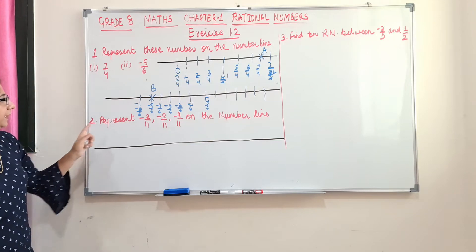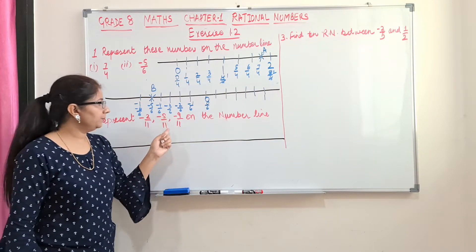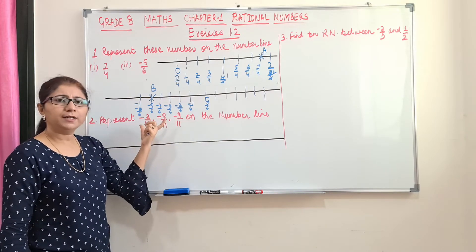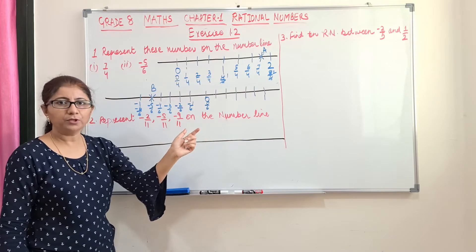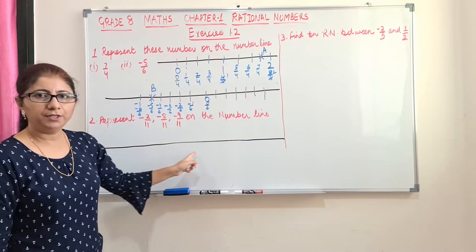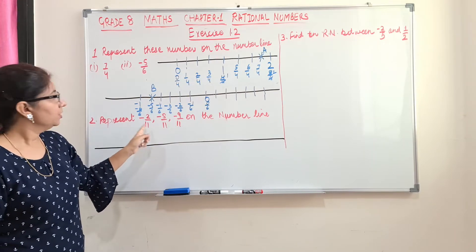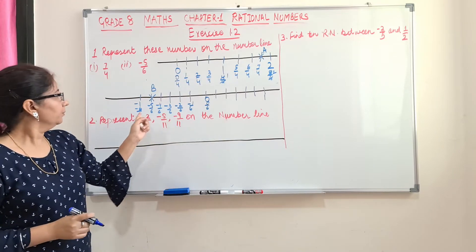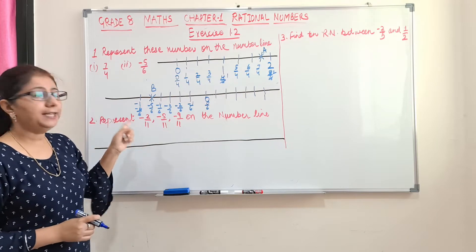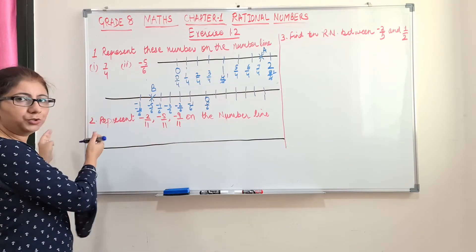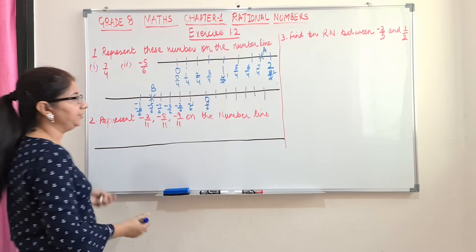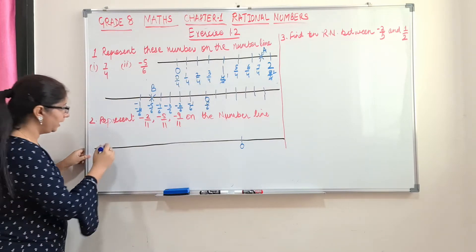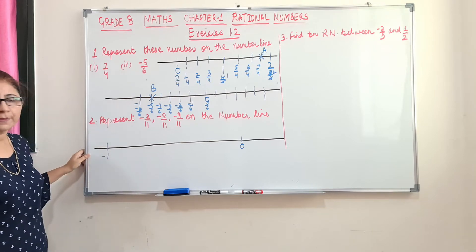Let's see the second question. Here it is represent minus 2 by 11, minus 5 by 11 and minus 9 by 11 on the number line. So we have to mark 3 numbers on the same number line. So these 3 numbers should be marked here. First of all, what is this? This is 11. So we need to divide any 2 rational numbers in 11 equal parts. And moreover, these are 3 negative numbers. That means we should have left side of the number line. So we will mark this as 0. Since 11 divisions are required, I will mark it as far as possible minus 1.